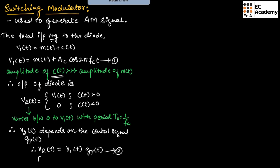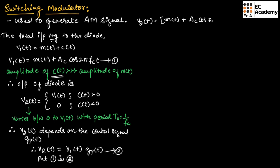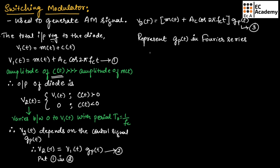V2(t) can be written as V1(t) × Gp(t) — let us call this equation number 2. Substituting equation 1 into equation 2, we get V2(t) = [m(t) + Ac·cos(2πFct)] × Gp(t) — let us call this equation number 3. Now we can represent the control signal Gp(t) in terms of Fourier series. Therefore, Gp(t) = 1/2 + (2/π)·cos(2πFct) + and so on. Let us call this equation number 4.